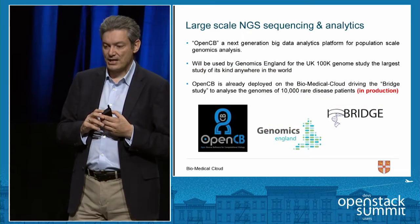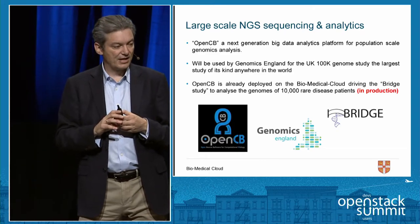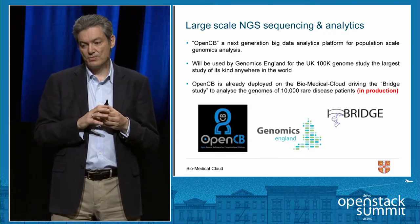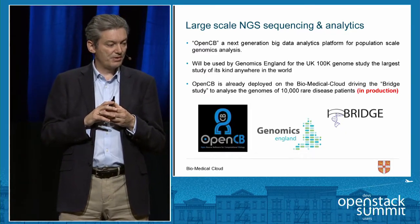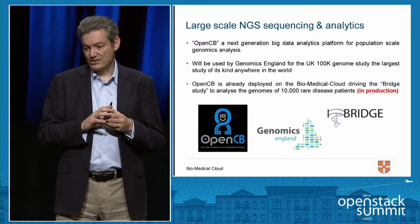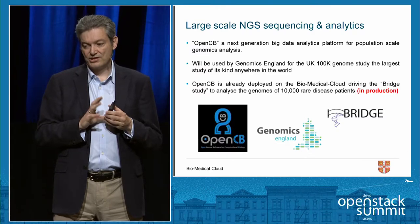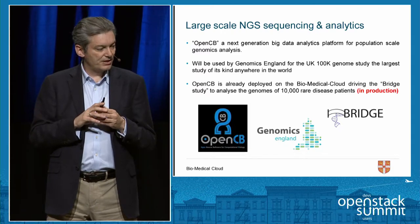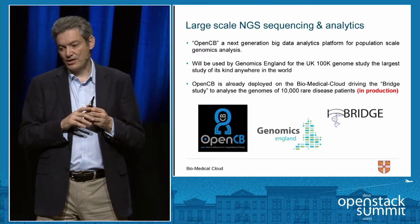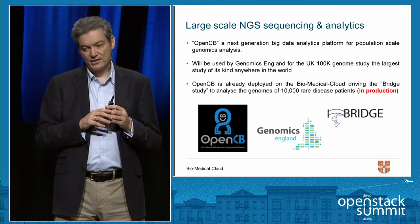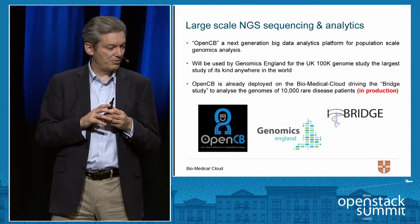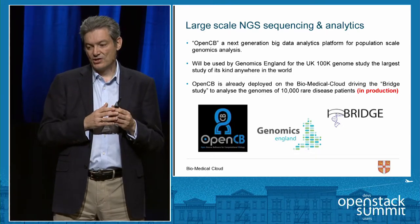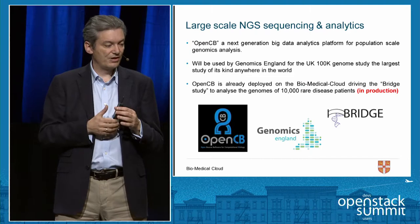Another use case we're working on in Cambridge is population-scale genomics analysis. We've developed a new genomics and analysis platform called OpenCB using Hadoop infrastructure. This has been developed with Genomics England to undertake one of the largest population studies in the world — the UK 100K Genome Project, where we'll be looking at the genomes of 100,000 people. This OpenCB technology is already deployed on the BioCloud, and we're running it over a UK 100K precursor project called the Bridge Project, looking at 10,000 patients' genomes with rare diseases. We're seeing two orders of magnitude performance increase over previous platforms.